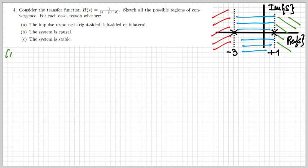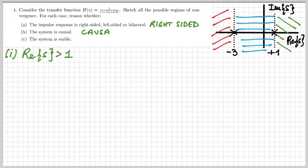Let's start with the green case: Re(s) greater than one. Because the region of convergence is a right half plane, the corresponding impulse response will be right-sided. The system will also be causal for the same reason, and the system will not be stable because the imaginary axis j-omega is not contained in the region of convergence.